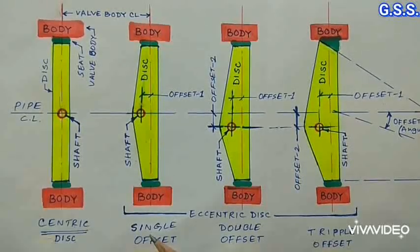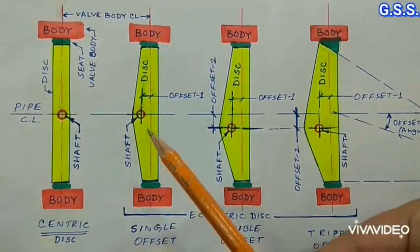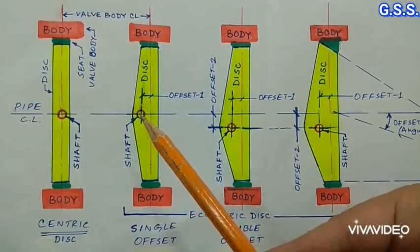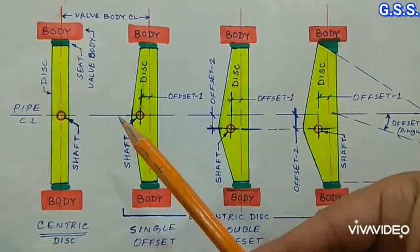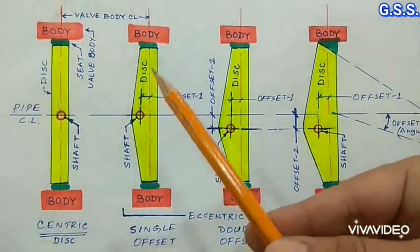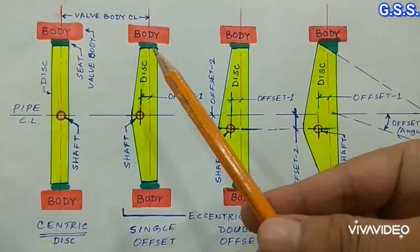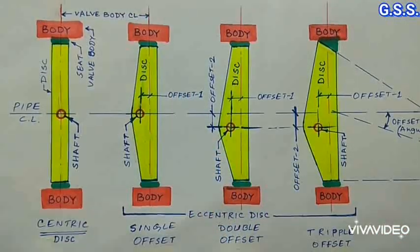In single offset eccentric butterfly valve, there is an offset between shaft axis and disc axis along pipe center line. This provides continuous sealing surface on the disc with less rubbing of disc with seat.